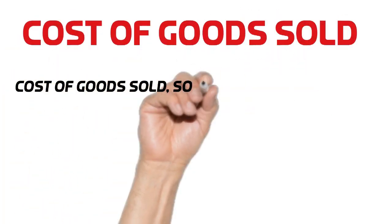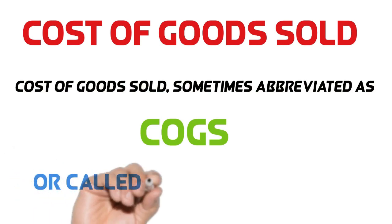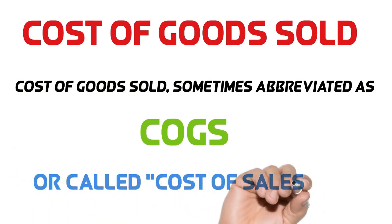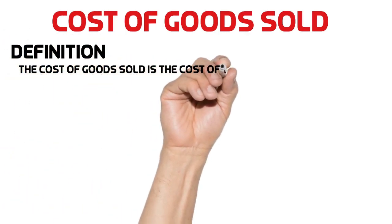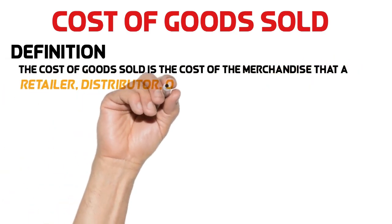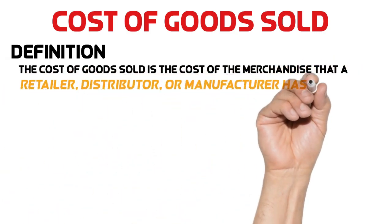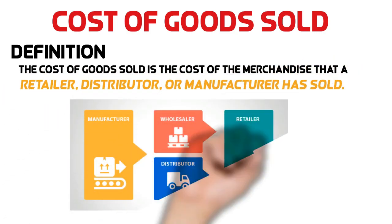Cost of goods sold, sometimes abbreviated as COGS or called cost of sales. The simplest way to define cost of goods sold is the cost of the merchandise that a retailer, distributor, or manufacturer has sold.